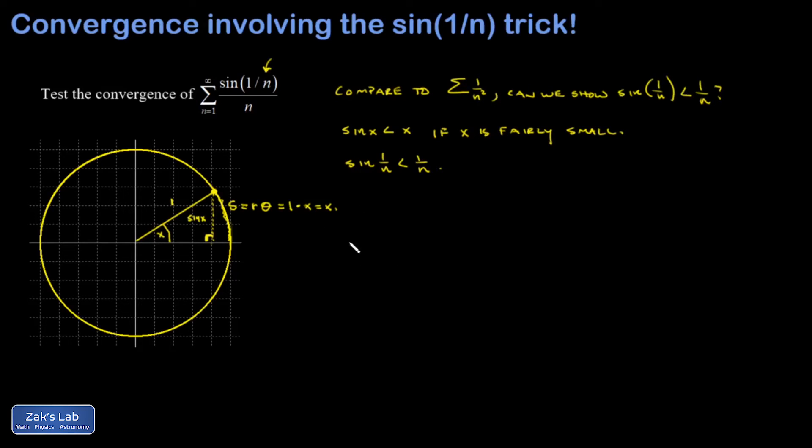So I'm going to say sine 1 over n over n is less than 1 over n squared, because sine 1 over n is less than 1 over n.